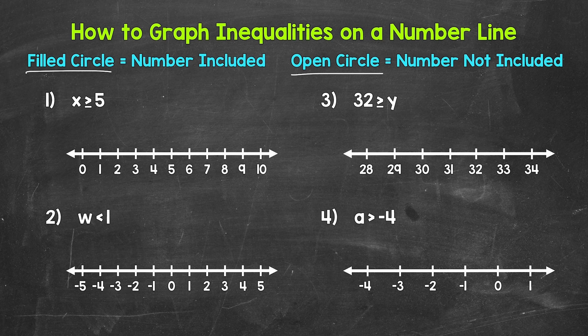Let's jump into our examples, starting with number one, where we have x is greater than or equal to five. Since x is greater than or equal to five, that means five is included — five is a solution. So let's start at five with a filled circle. A filled circle shows that we are including that number, and then an open circle shows that we are not including that number. So a filled circle is needed here.